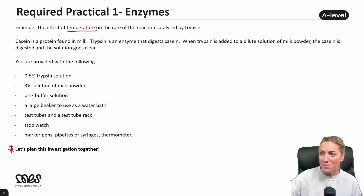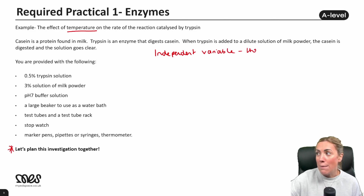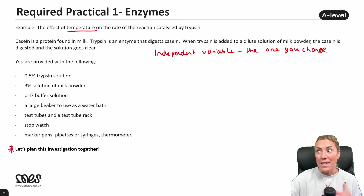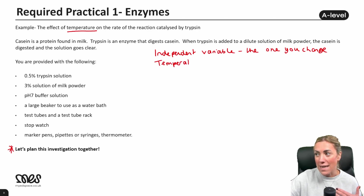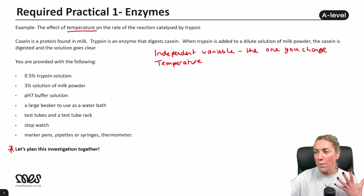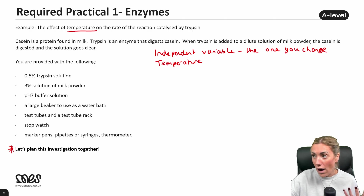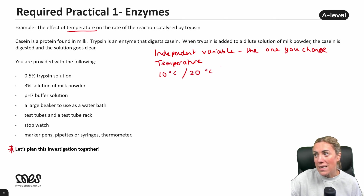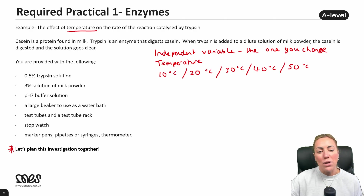Now let's plan this investigation. The independent variable is the one you change — the one you're investigating. For us that's temperature: the one we're going to change to see how it affects the rate. In any investigation we should use at least five different values for the independent variable so we can see a trend and plot a graph. For example, you could use 10, 20, 30, 40, and 50 degrees Celsius — or even 60 if you want more data points.